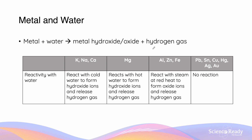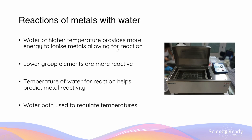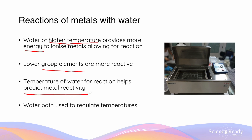Some factors to consider include the reactivity of the metal and the temperature of the water. Water at a higher temperature provides more energy to ionise metals, allowing reaction to occur. A water bath is the apparatus used to regulate temperatures in order to better predict metal reactivity — an example of a water bath is shown in the image to the right.